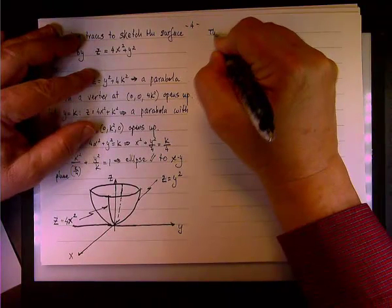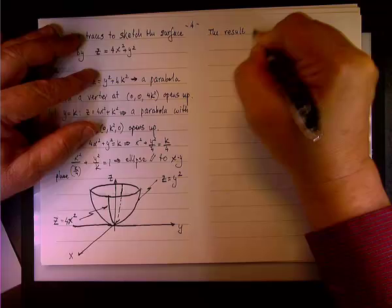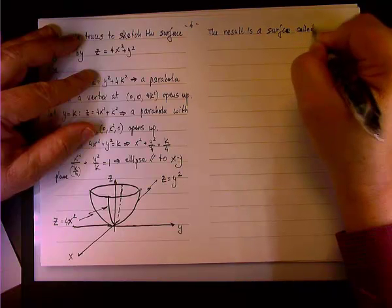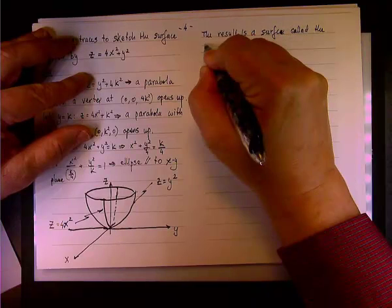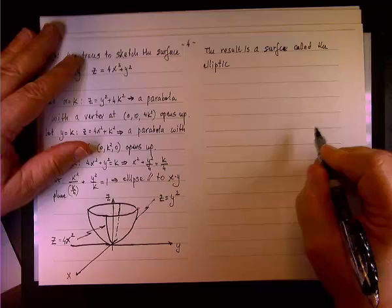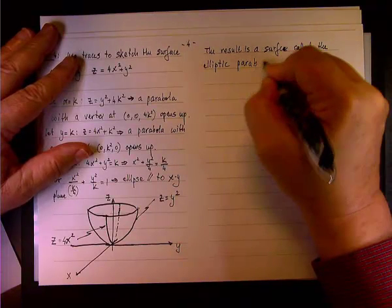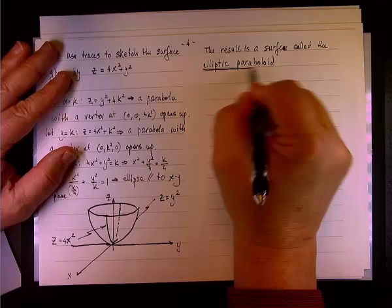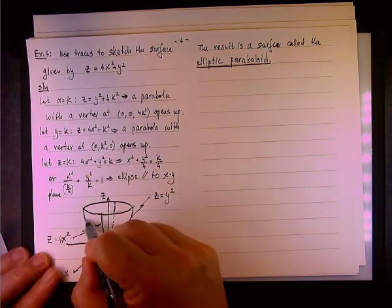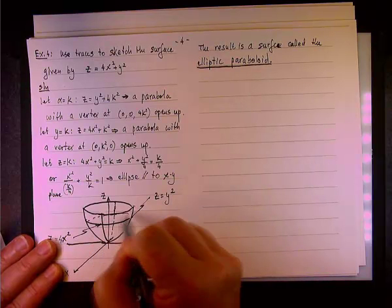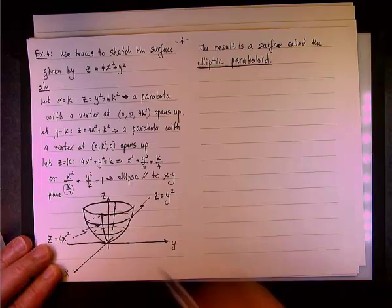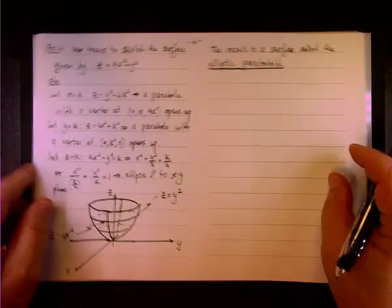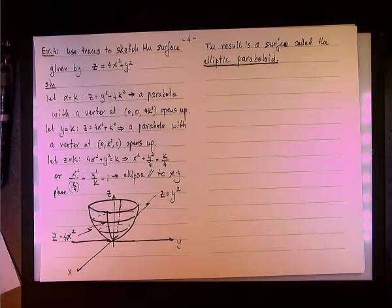So, this is what we call elliptic paraboloid. The result is a surface called the elliptic paraboloid. Now, the traces. If we go, the traces. Here's another ellipse. Here's another ellipse and so on. So, you can see how this ellipse is working. Let me show you the handout.